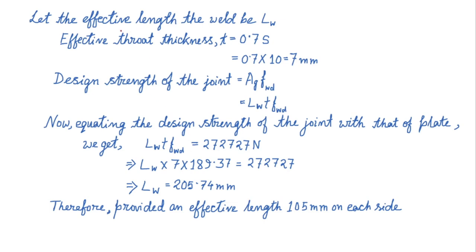Let the effective length of the weld be Lw. Then effective throat thickness t equals 0.7S. So this is the effective throat thickness, where S is the size of the weld. If I put the value of S as 10 mm, throat thickness t comes out as 7 mm.